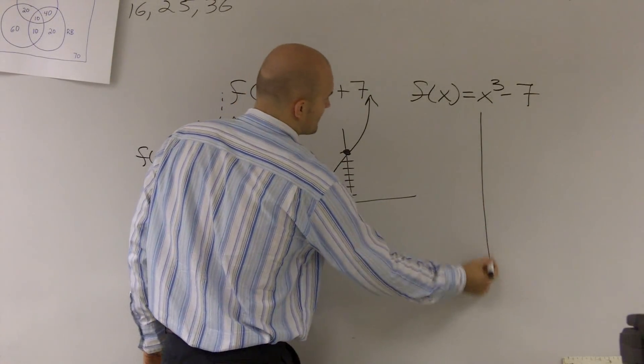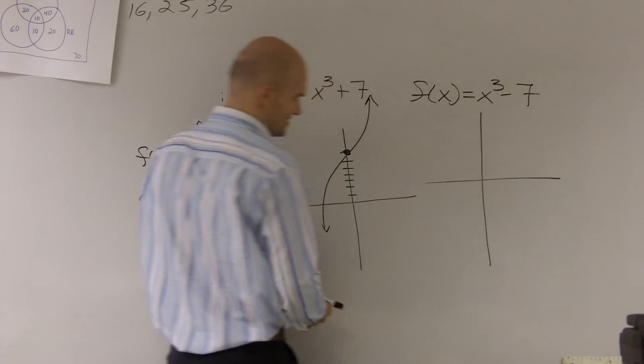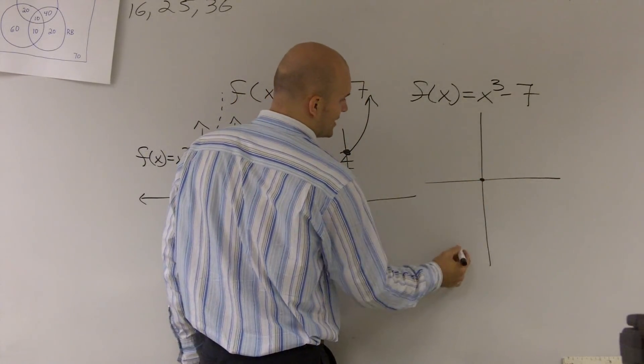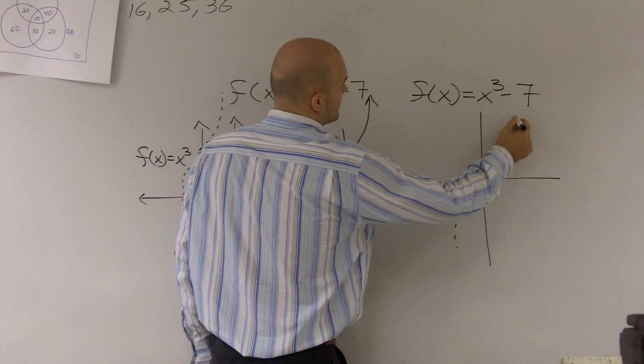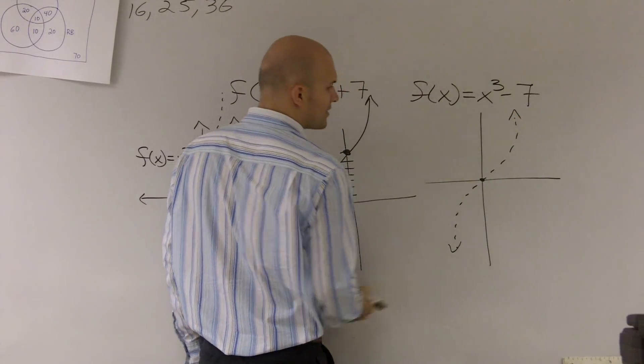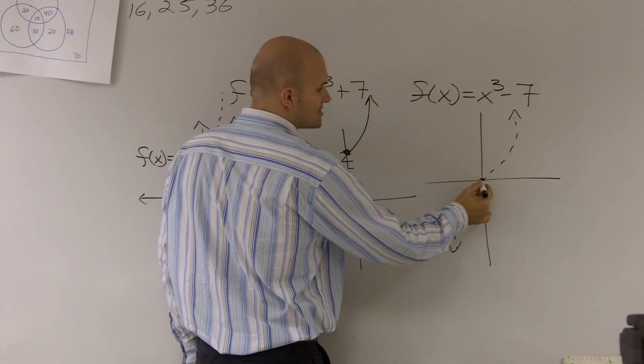So this graph, as my x-axes are really crooked, would go down. Instead of crossing here, here's our graph. It's really important to make sure you know what your graphs are. It would now be shifted down 7 units.